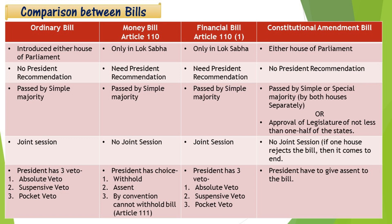And approval of the legislature of not less than one half of the states is also required. An Ordinary Bill can also go to a joint session. A Money Bill has no joint session. A Financial Bill does have a joint session. A Constitutional Amendment Bill has no joint session. If one house rejects the bill, it comes to an end — meaning if one house rejects it, the bill lapses there.